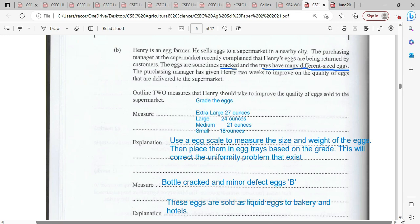Henry is an egg farmer. He sells eggs to a supermarket in a nearby city. The purchasing manager at the supermarket recently complained that Henry's eggs are being returned by customers. The eggs are sometimes cracked and the trays have many different sized eggs. The purchasing manager has given Henry two weeks to improve on the quality of eggs that are delivered to the supermarket. Outline two measures that Henry should take to improve the quality of the eggs sold to the supermarket.